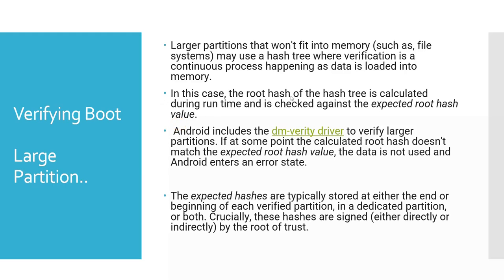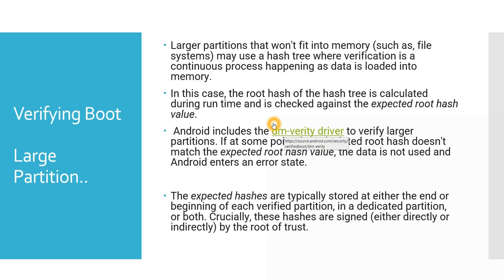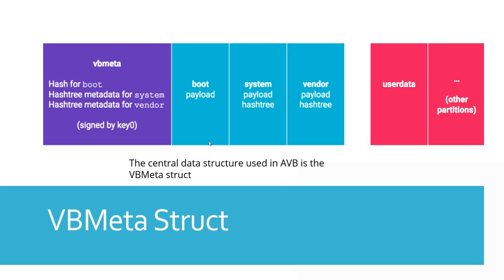For larger partitions, the entire data won't fit into memory, so a hash tree is used. In a hash tree we calculate only the hash value of the root node. The root hash of the hash tree is calculated during runtime and checked against the expected hash value — if they match we continue, otherwise an error is thrown. Android includes the DM Verity driver to verify larger partitions; for example, the system image is stored in memory and the root address is the hash value that is checked.